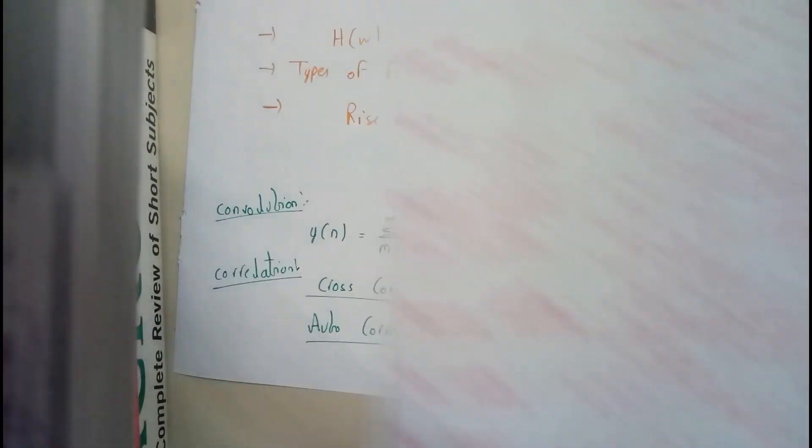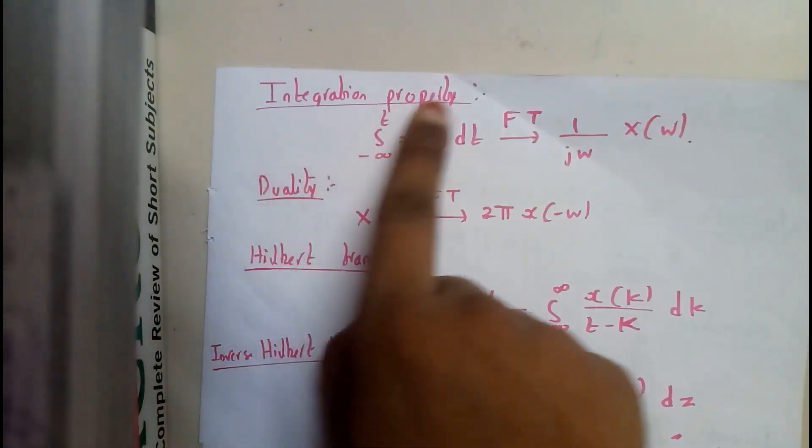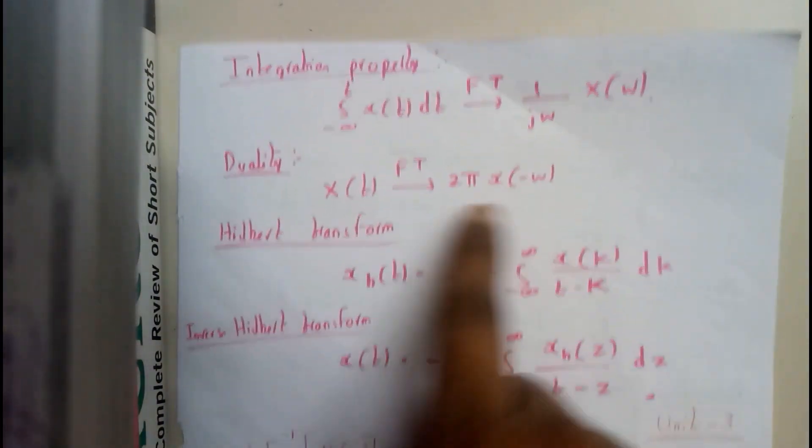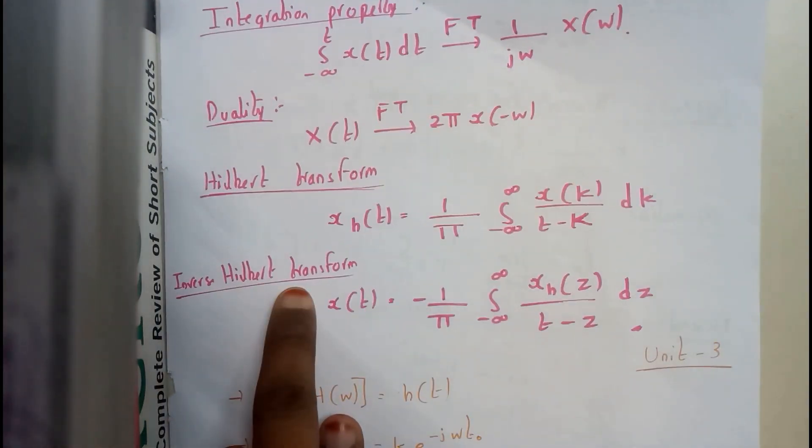I hope everyone we derived all these formulas. That's the reason why I am just showing you the formulas. Integral property this will be the formula. Duality this. Hilbert transform this. And inverse Hilbert transform this.